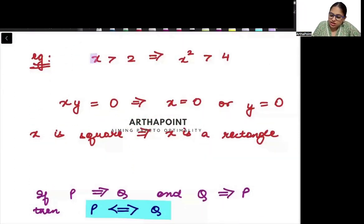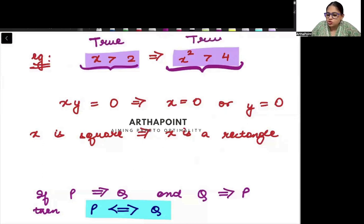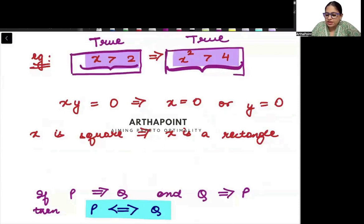Try to understand this thing. Suppose I tell you, X is greater than 2. So if X is greater than 2, toh X square will always be greater than 4. Isn't it? Agar X 2 se bada hai, X is 3, 4, 5, 7, 10, 11, 12, 15. X is greater than 2. Toh X square will be greater than 4. So when this is true, this will be true. When X is greater than 2, X square will be greater than 4. So I can say this is P, and it implies Q.